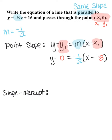I notice a couple things. First of all, I have a double negative scenario inside the parentheses, so instead of x minus a negative 8, I'm going to write that as x plus 8.